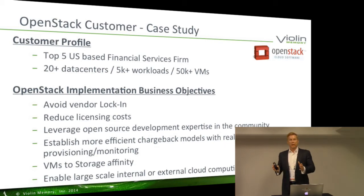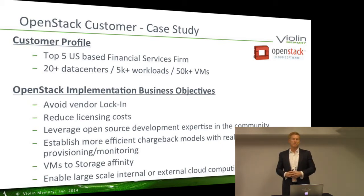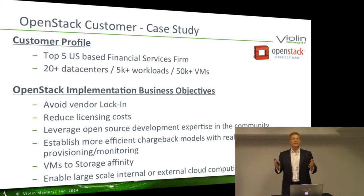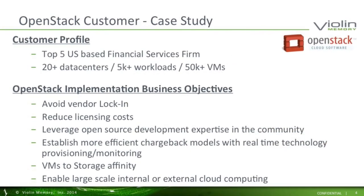With this particular case study — as pertained to another financial institution heard today — this is a leading financial institution within the United States, a top-five financial services firm. They have over 20 data centers, over 5,000 workloads requiring varying levels of performance and service, tens of thousands of users, and over 50,000 virtual machines. The scale and complexity of this customer is quite significant. To meet those requirements, they chose to work with OpenStack, Violin Memory, and Red Hat, among other vendors, to build out this infrastructure.